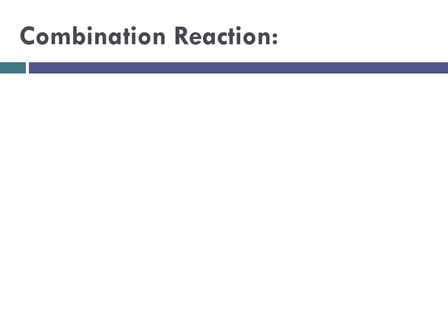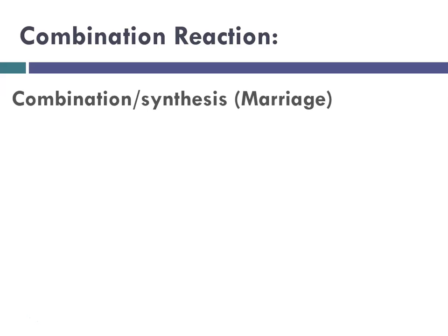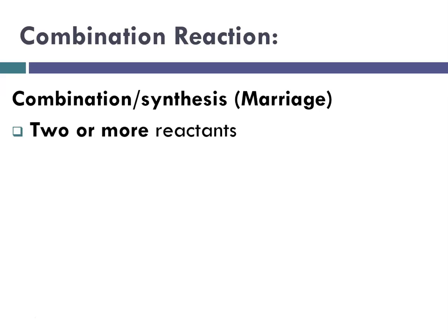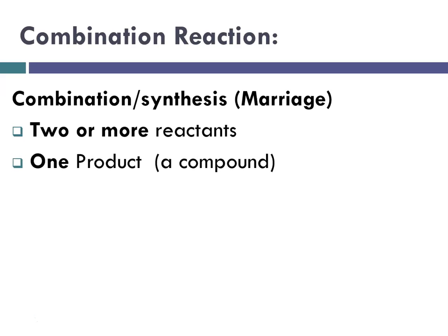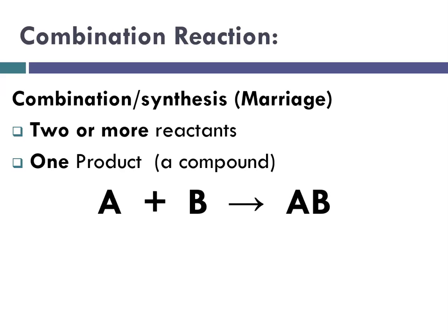We'll start with the combination reaction, sometimes called synthesis. You can think of it as marriage — two or more reactants combine and you get one product, so two things go to one. We can say that reactants A plus B combine to form the compound AB.